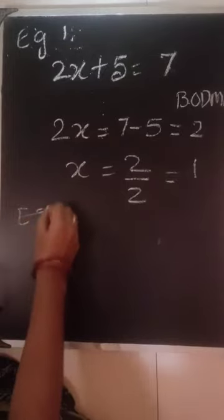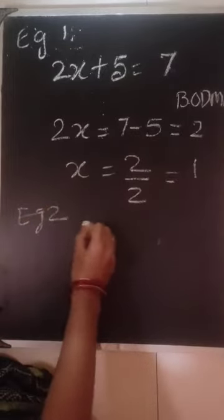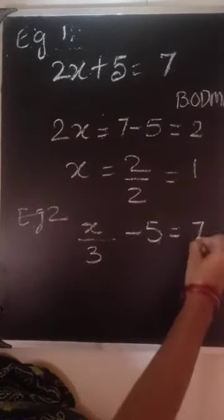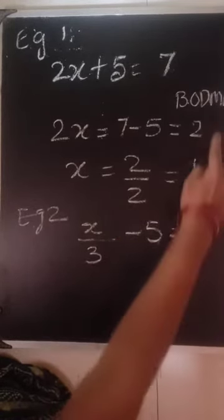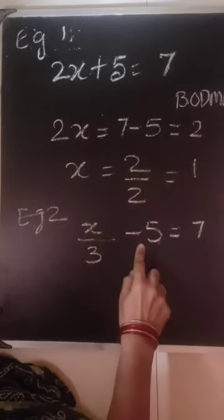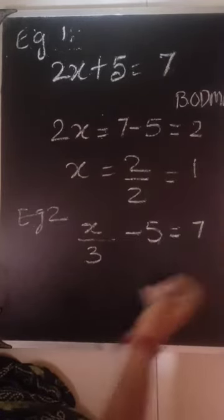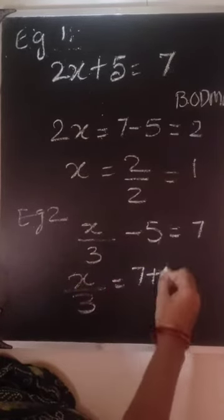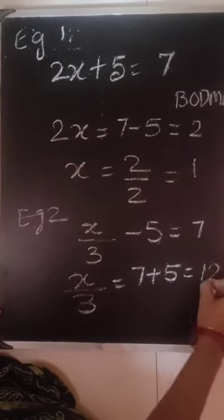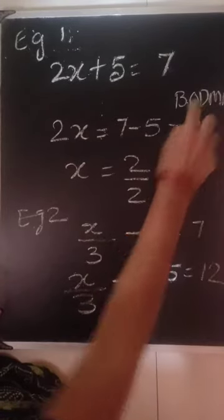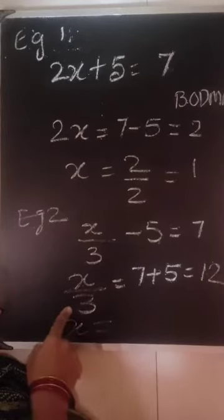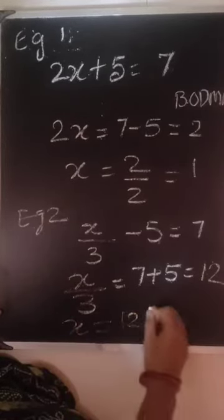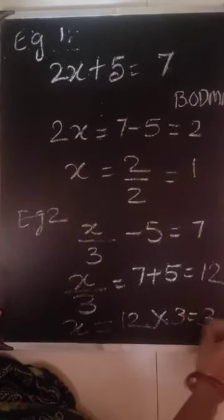Similarly, if we take example 2, let us assume that is x divided by 3 minus 5 is equal to 7. What will come? Again, if I see BODMAS, first is the subtraction term. So I will take this subtraction term to the right hand side. So it becomes x by 3 is equal to 7 plus 5 which is equal to 12. And then again division comes into picture. So x, since 3 is in division, it will go to multiplication in the right hand side. So 12 into 3 which is equal to 36.